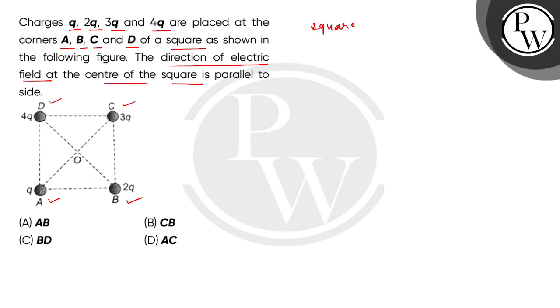Now charges Q, 2Q, 3Q and 4Q are placed respectively. Now this is a square, so each side will be the same as well as the diagonal lengths will be the same.